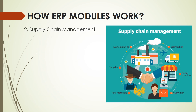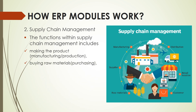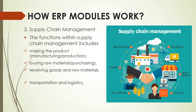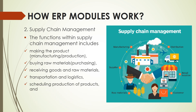In terms of supply chain management, here are the functions: making the product or manufacturing and production, buying raw materials or purchasing, receiving goods and raw materials, transportation and logistics, scheduling production of products, and plant maintenance. All of these functions are included in the supply chain management module of an ERP.